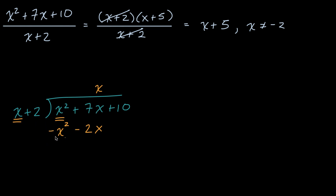And then we will be left with seven x minus two x is five x. And then x squared minus x squared is just zero. And then we can bring down this plus 10.